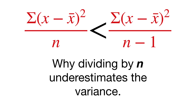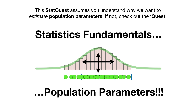Today we're going to talk about why dividing by N underestimates the variance. This StatQuest assumes you already understand why we want to estimate population parameters. If not, check out the quest.